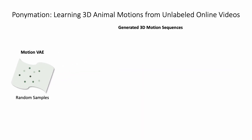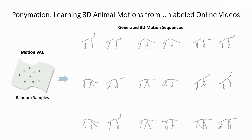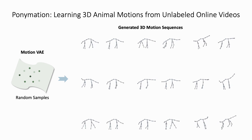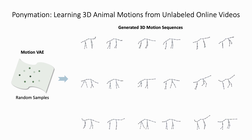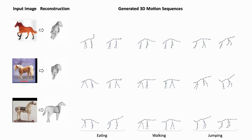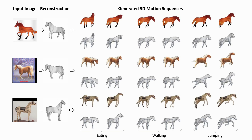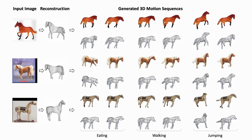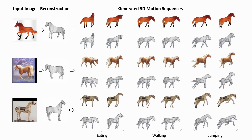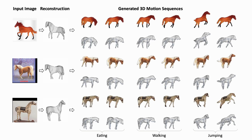Once trained, at inference time, we can sample from the motion VAE latent space to generate diverse, realistic 3D motion sequences spanning a wide variety of motion patterns like eating, walking, and jumping. We can apply these generated motion sequences onto any animal instance and generate diverse 4D animations in a feed-forward fashion within seconds, given just a single test image, including abstract drawings and artifacts.